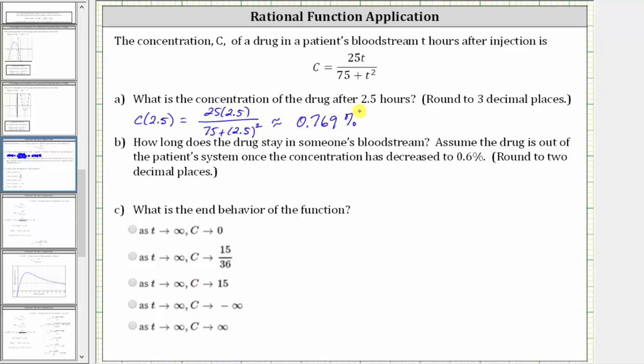For part B, how long does the drug stay in someone's bloodstream? Assume the drug is out of the patient's system once the concentration has decreased to 0.6%. Round to two decimal places. They're telling us when the concentration, or C, is equal to 0.6, the drug is out of the patient's system.